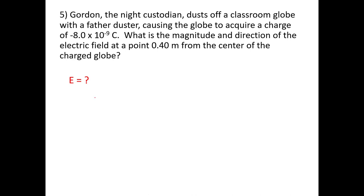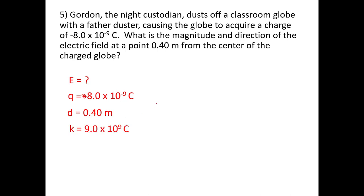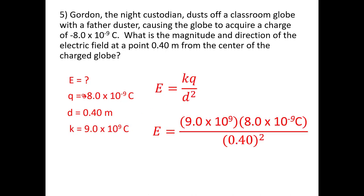In the last problem, we have E and Q and a distance, so we need k and we'll use the equation E = kQ/r². Plugging in all the values, we get 450 newton-coulombs towards as our answer.